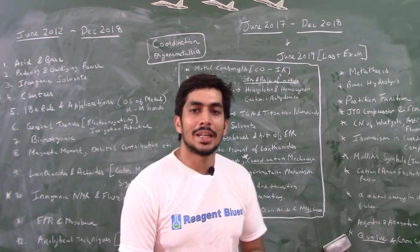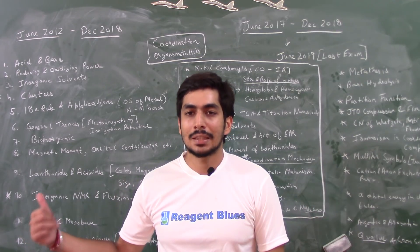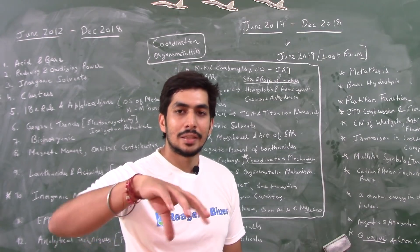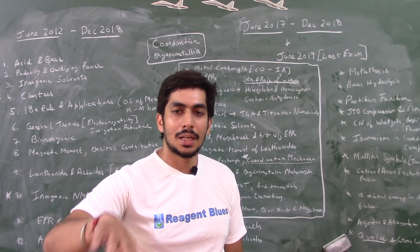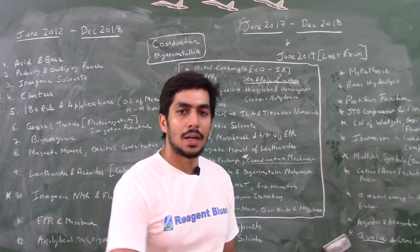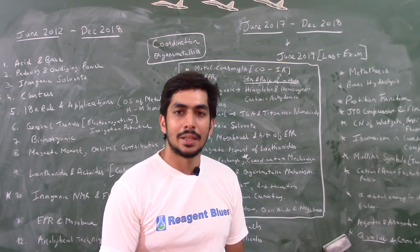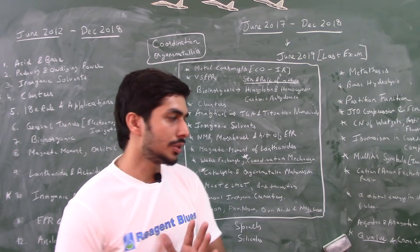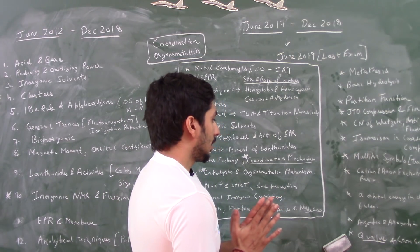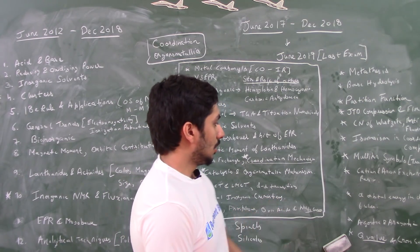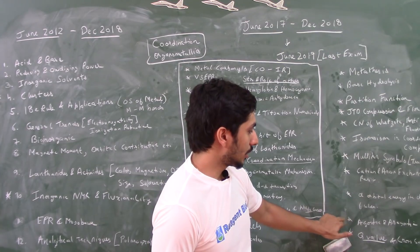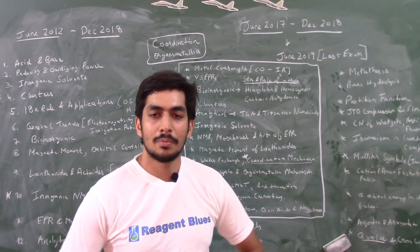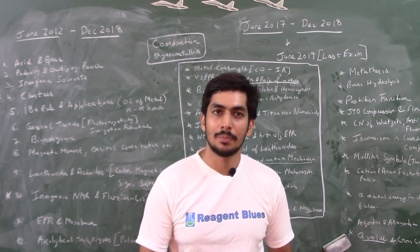You should also know exchange rates for lanthanides and actinides — specifically what kind of lanthanides separate out in a cation exchange column versus an anion exchange column, and the principles of cation and anion exchange chromatography. From organometallics, you can do agostic and anagostic interactions; there was one question in 2014 or 2015 but after that no questions have appeared on agostic and anagostic interactions in CSIR.